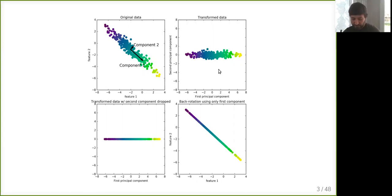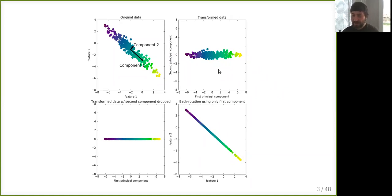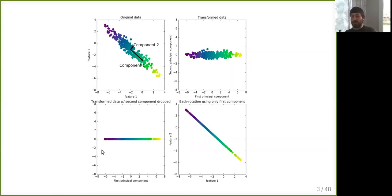Principal component analysis finds this rotation of the data. This is not yet dimensionality reduction — we just rotated the data, so it's a lossless process and the same dimensionality. But now the x-axis is the dimension of most variance, which we can think of as containing the most information. The y-axis contains less information. PCA is used for dimensionality reduction by keeping only the first k components. If we project only on the x-axis, we drop the second component and have a 1D representation that captures as much variance as possible.